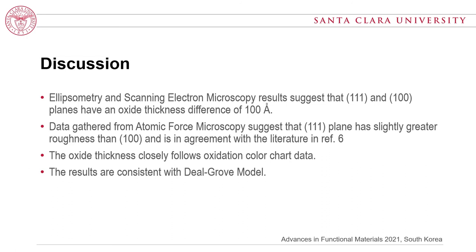In summary, ellipsometry and SEM results confirm that the 111 plane and 100 plane have an oxide thickness difference of approximately 100 Å. AFM data suggests the 111 plane has slightly greater roughness than the 100 plane, in agreement with the literature. The oxide thickness closely follows the oxidation color chart data, and the results are consistent with the Deal-Grove model.